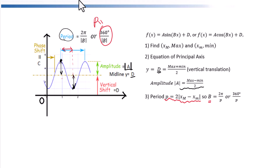At IB AI SL level, there is no horizontal translation. So in this video, we only discuss f(x) equals A·sin(Bx) + D or f(x) equals A·cos(Bx) + D. D is a vertical translation, and y equals D is the equation of the principal axes. The absolute value of A is the amplitude. B can be found using 360 degrees over the period.